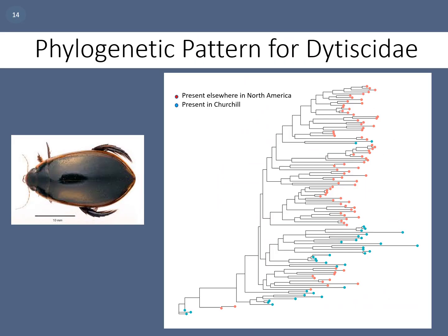Pictured here is a maximum likelihood tree for the family Dytiscidae. The blue dots represent species found in Churchill, while orange dots represent species found elsewhere in Canada and Alaska but not in Churchill. As you can see, the Churchill species are clustered phylogenetically.